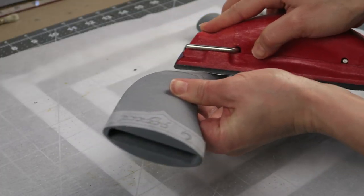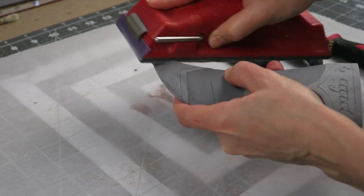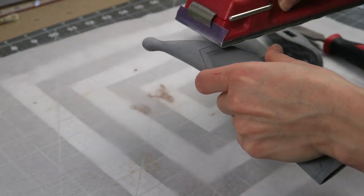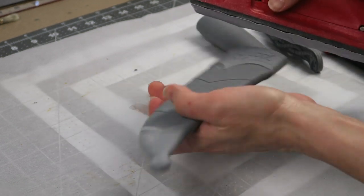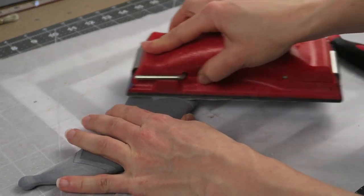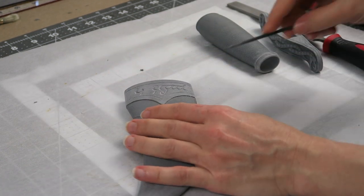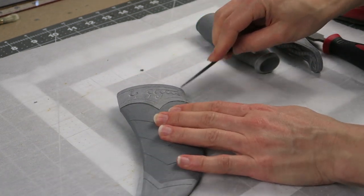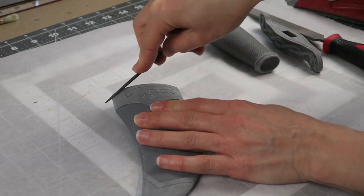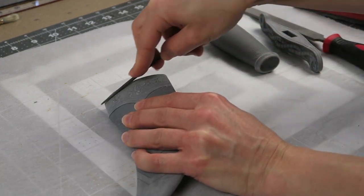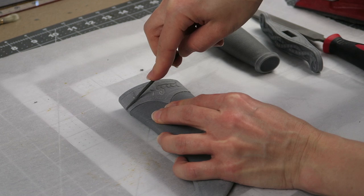I also sanded the top and bottom sections smooth using the prep and weapon and some 220 grit paper. For the text and the engraved details I used a very small needle file just to clean out all of those lines and ensure that everything was clear and smooth.